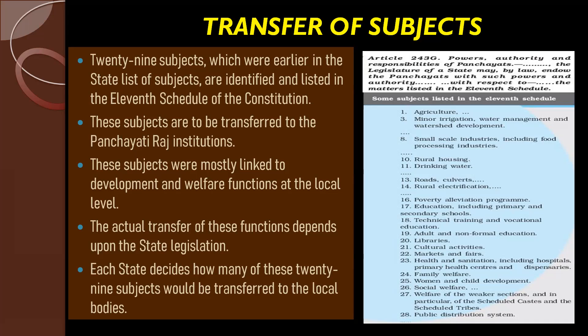The provisions of the 73rd Amendment were not made applicable to areas inhabited by Adivasi populations in many states of India. In 1996, a separate act was passed extending the provisions of the panchayat system to these areas, and more powers were given to the gram sabhas of these areas so that they could also flourish.